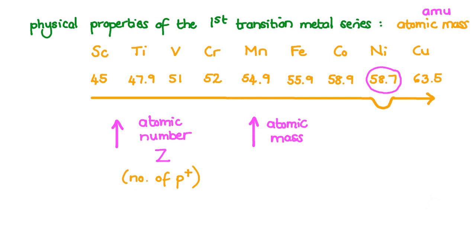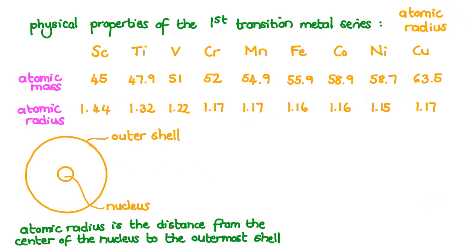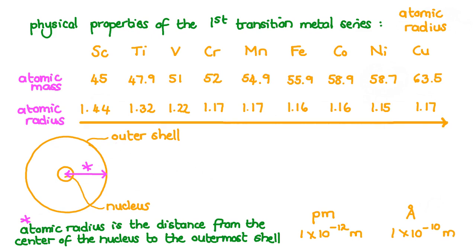The atomic radius is the distance from the center of the nucleus to the outermost electron-containing shell. Atomic radii can be measured in different ways and using different units, for example in picometers (1×10⁻¹² meters) or in angstroms (1×10⁻¹⁰ meters). The values shown here are in angstroms. Moving from left to right across this series, as the atomic number increases, the atomic radius decreases, with just a slight increase at the end for copper.